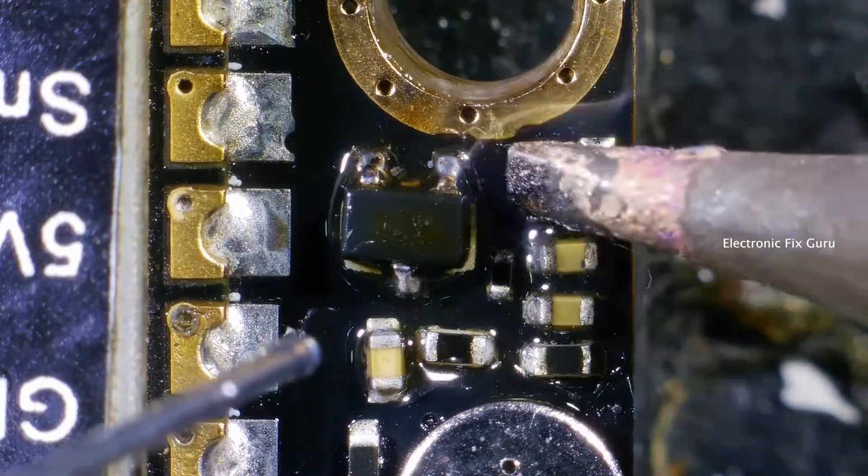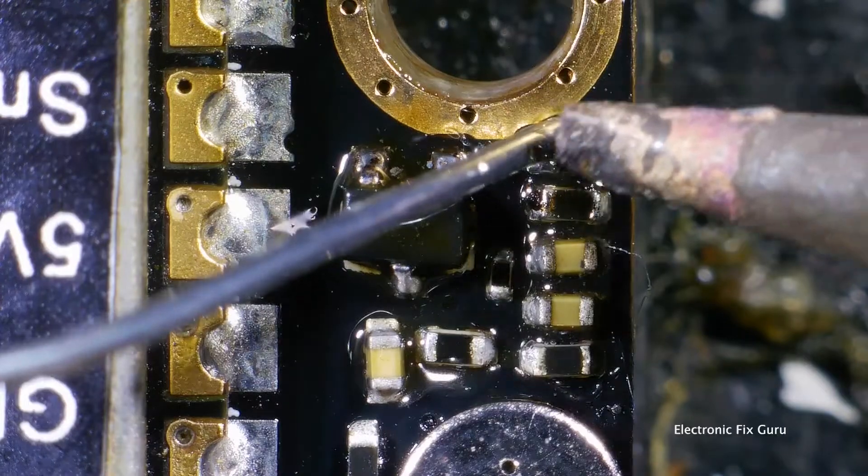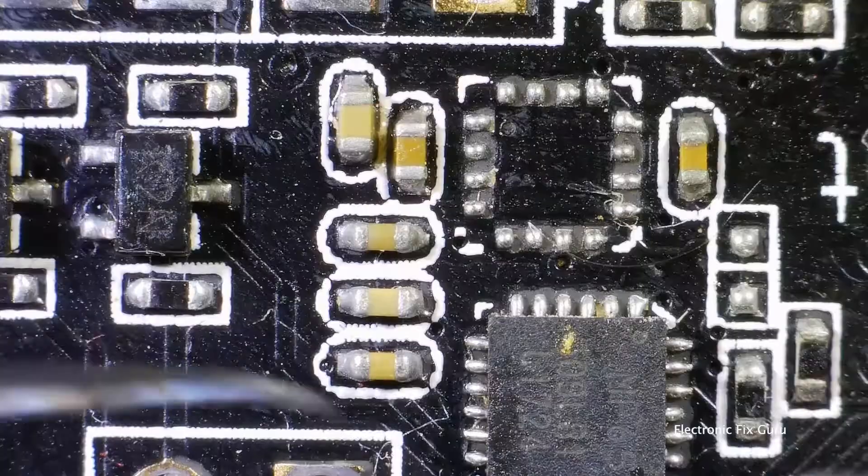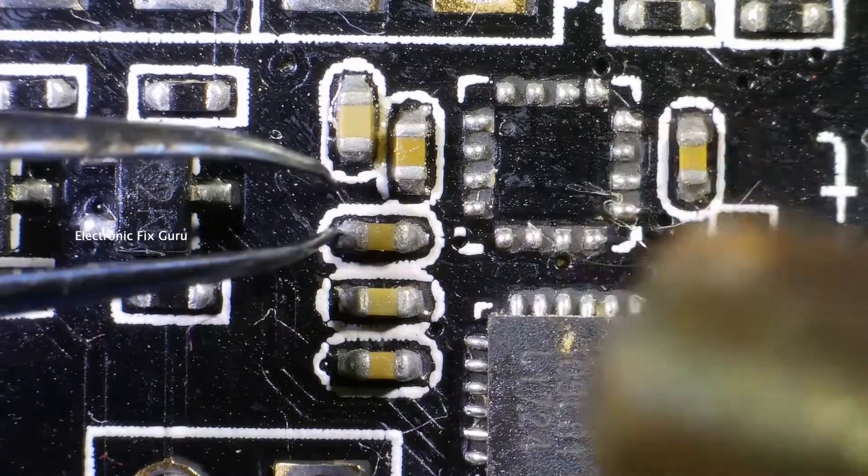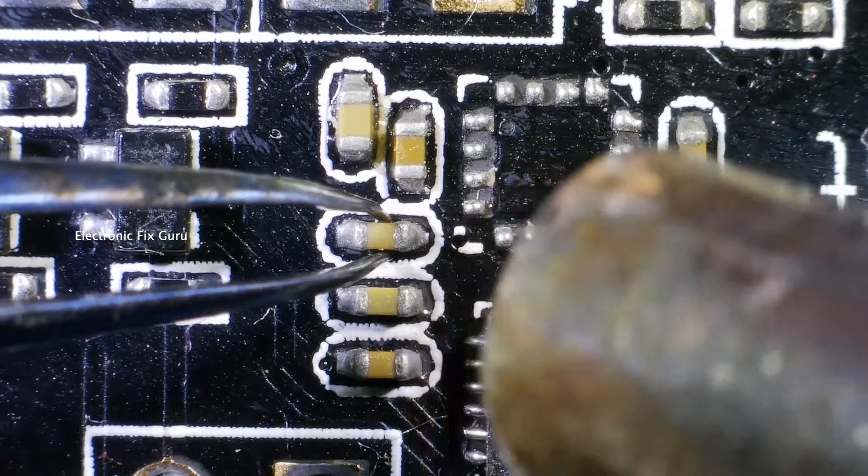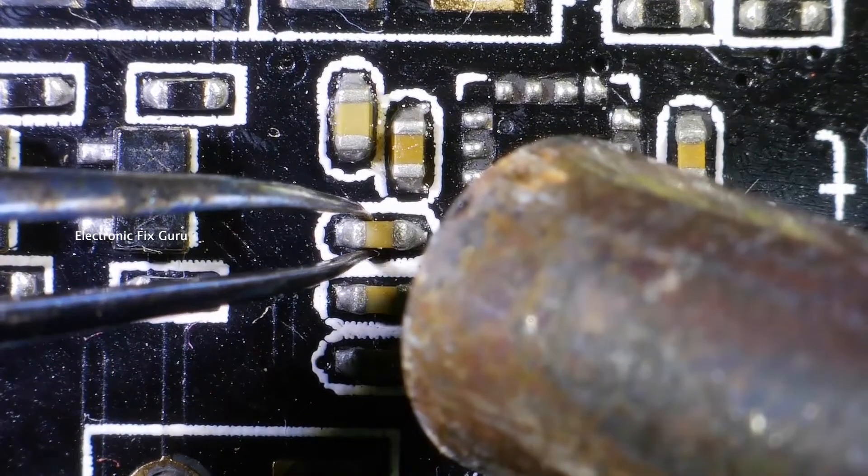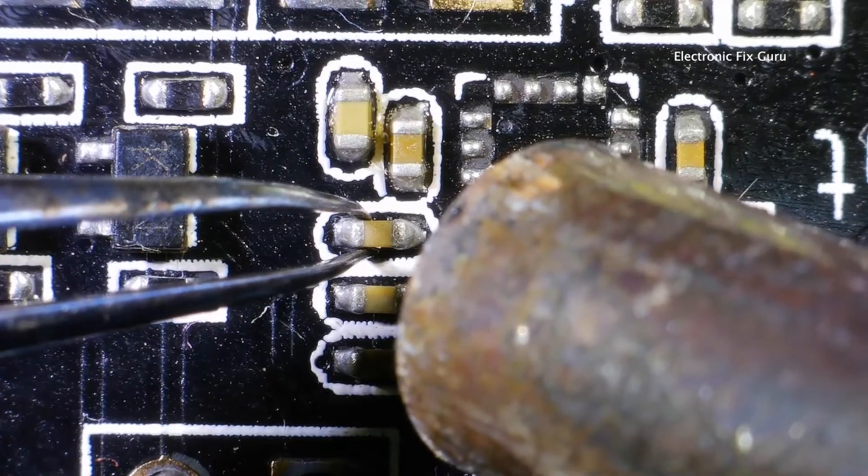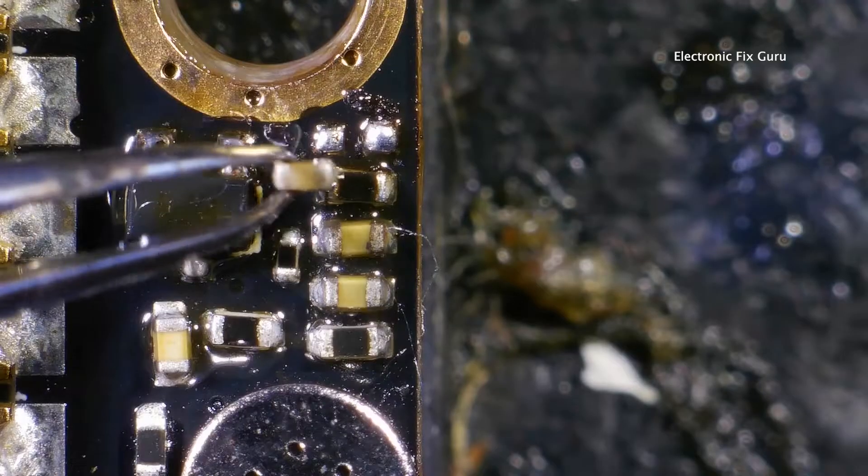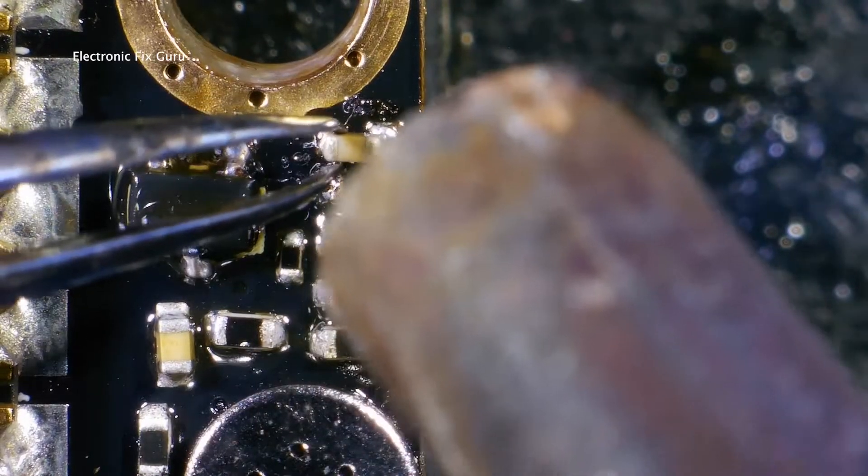Let's pre-tin this missing capacitor pads. I'm extracting a capacitor from a salvage board. Solder this one in here.